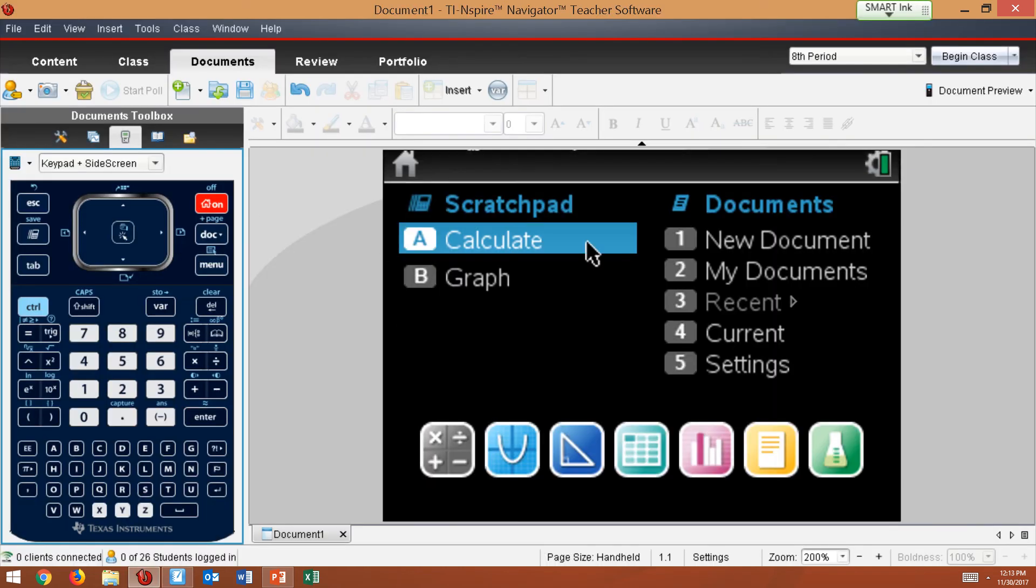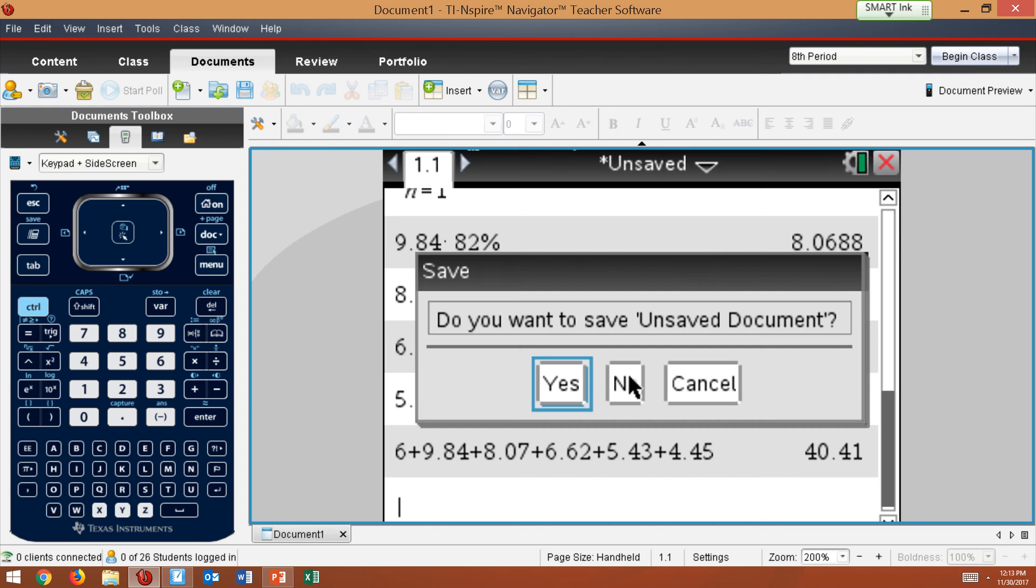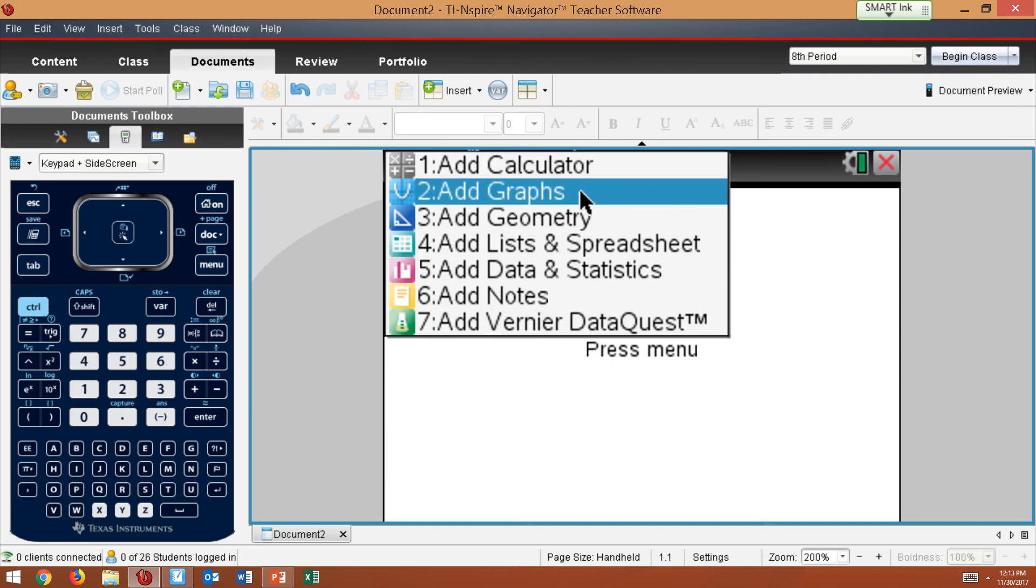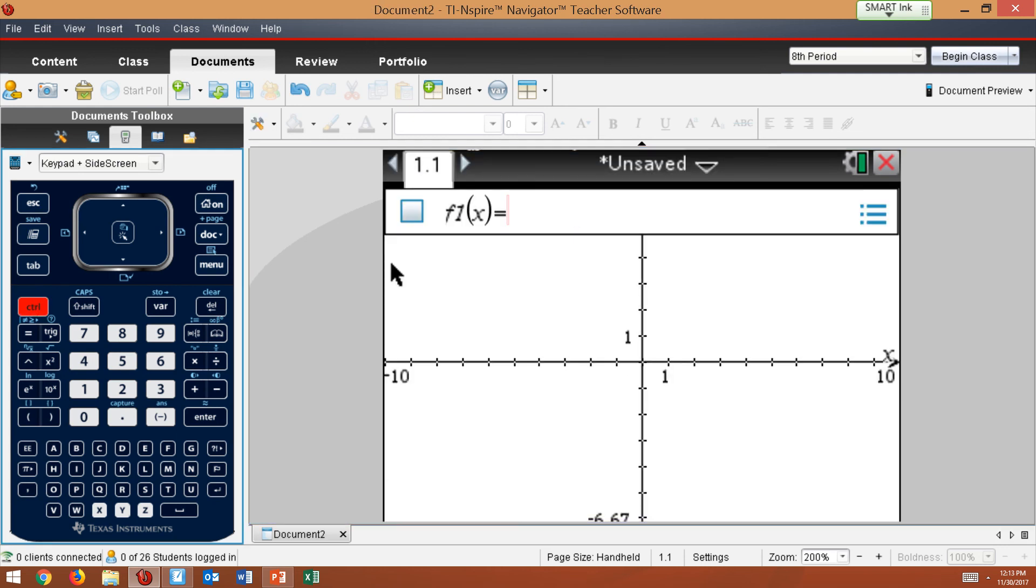You could graph. And I'll show you how to graph it real quick. Go to new documents here. Add a graph. And you would graph the left side of that equation, which was 75 divided by X plus 60 divided by X plus one.